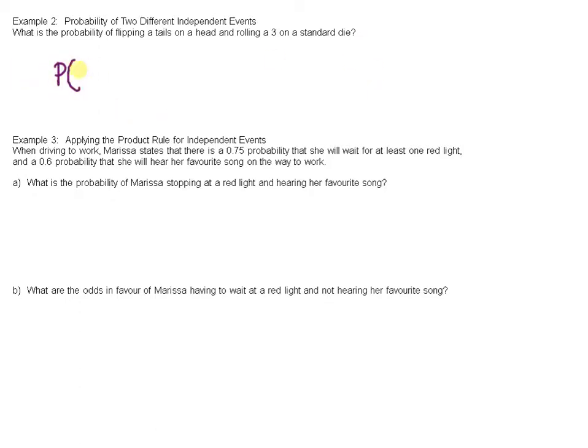So probability of a tails and a three. The probability of flipping a tails is one over two, right? And the probability of rolling a three, well, we have six sides on a die, so it's one over six. And we actually multiply these because flipping heads or tails does not affect rolling a three on a standard die. So this is the product rule. Therefore, the probability is one over twelve.